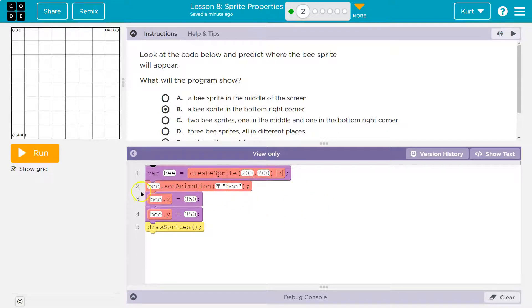We then say, okay, our B is going to have this animation. And it's going to be the picture of a B. Look at the code below and predict the B sprite will appear. Ah, this is a trap.